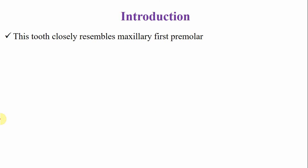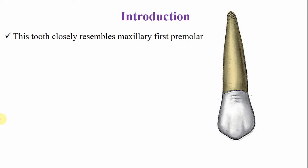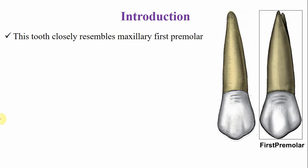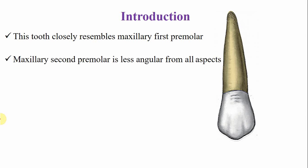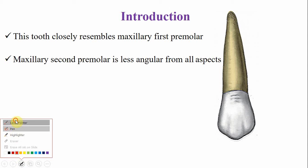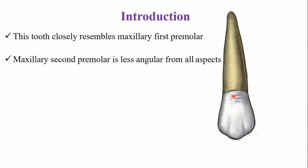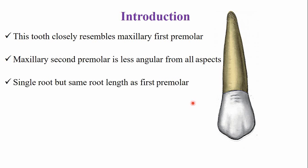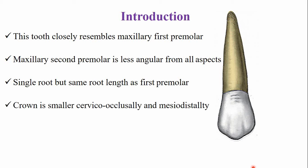This tooth closely resembles the first premolar. The maxillary second premolar is less angular from all aspects — it is generally more rounded from the buccal aspect, the occlusal aspect, and the lingual aspect. This tooth has a single root.